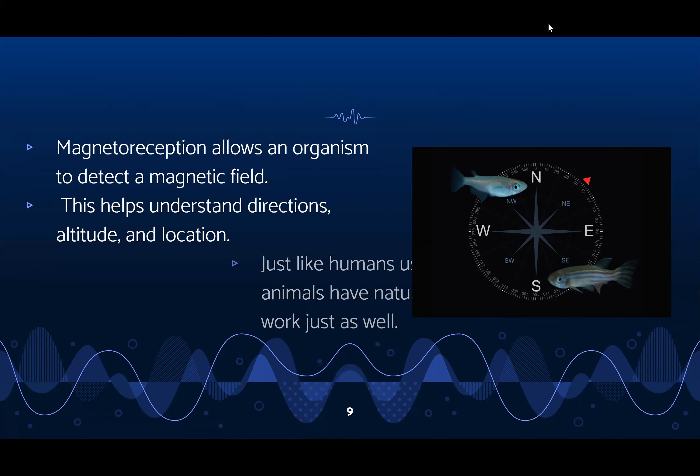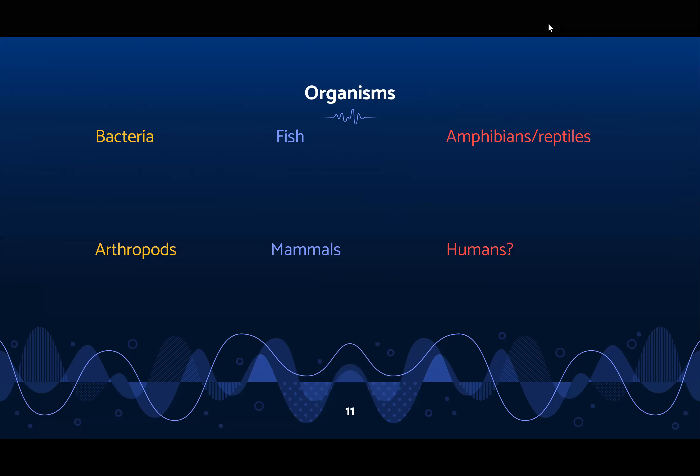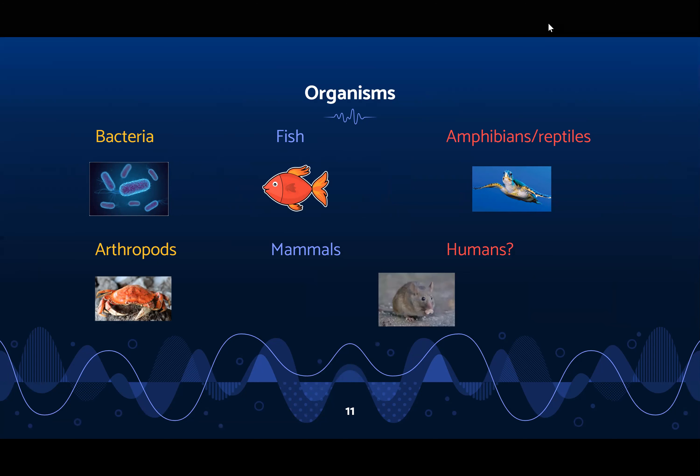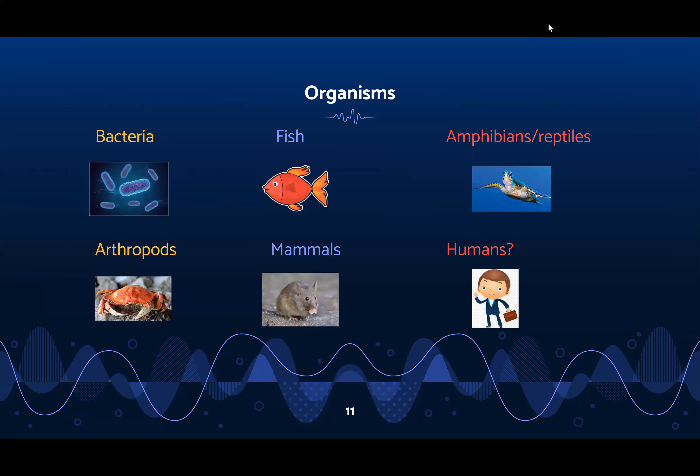What organisms use magnetoception? We see it in bacteria, fish, amphibians and reptiles like frogs or turtles, arthropods, and many mammals like mice, pigeons, and hens. But what about humans? Humans may have magnetoception, but scientists are not sure.